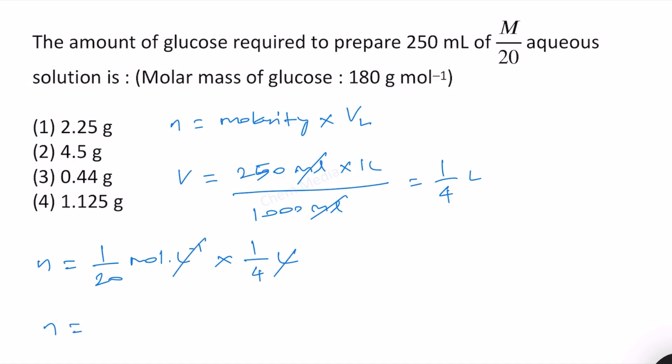Therefore, number of moles will be 1/80. We also know that mass is equal to number of moles times molar mass. Therefore, this is equal to 1/80 moles times the molar mass of glucose, which is given as 180 gram per mole.